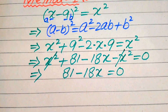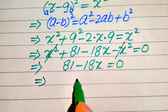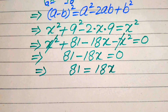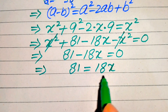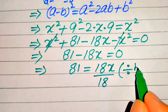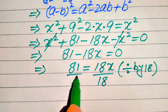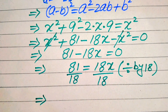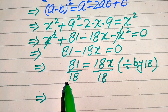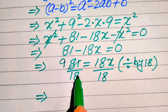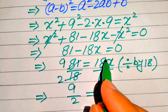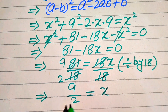Because we solve this problem for the value of x, we move minus 18x to the right hand side and it will be written as 81 equals to 18x. In order to find the value of x we divide both sides by 18. After division by 18 we cancel these two terms by the table of 9: 9 times 9 becomes 81 and 9 twos are 18, so we get 9 over 2 equals to x, and the 18 cancels out and we get our x.